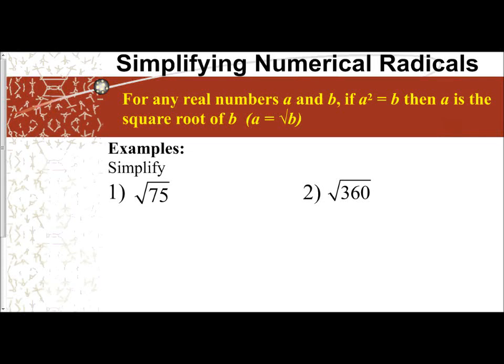In this video series we're going to focus on reviewing how to simplify radicals. In this first video we are going to look at how to simplify numerical radicals. So if we have real numbers a and b, and if a² equals b, then we consider a to be the square root of b.